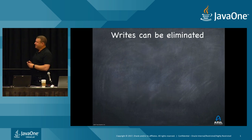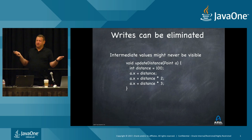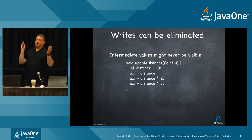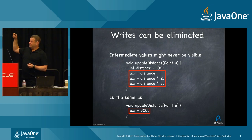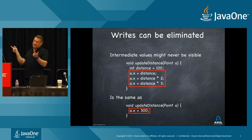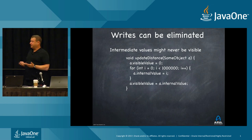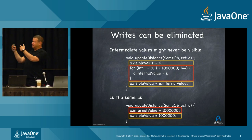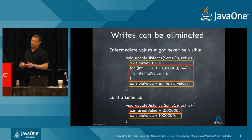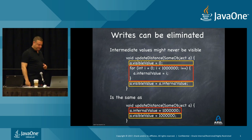Writes can also be eliminated. If you write to a.x three times, the compiler only has to do the last write — it can skip the intermediate ones because you can't observe the difference if it's fast enough. Taken further: a loop doing a million writes can be completely eliminated if the next line overwrites the result anyway. The whole loop runs in zero time — you're not observing the intermediate values.